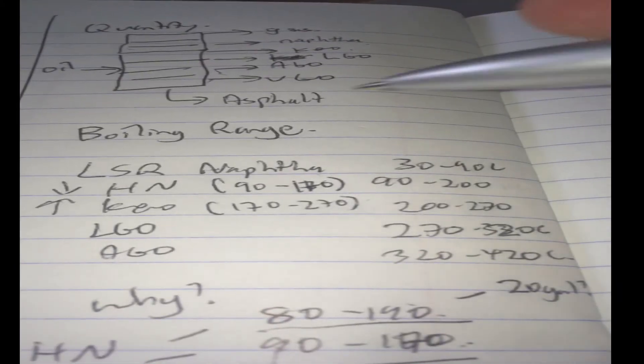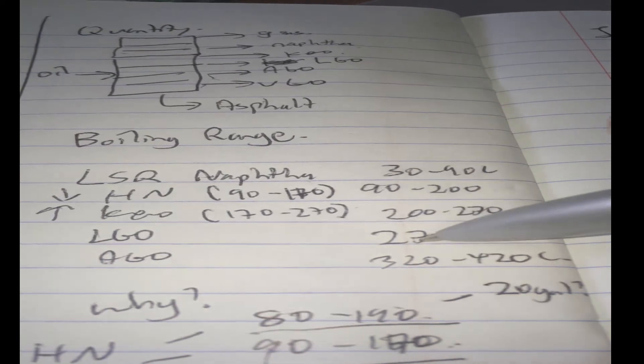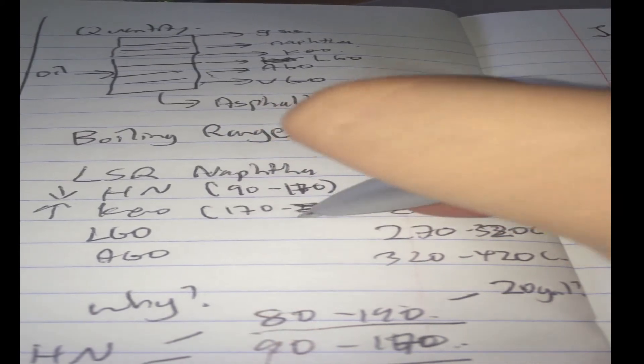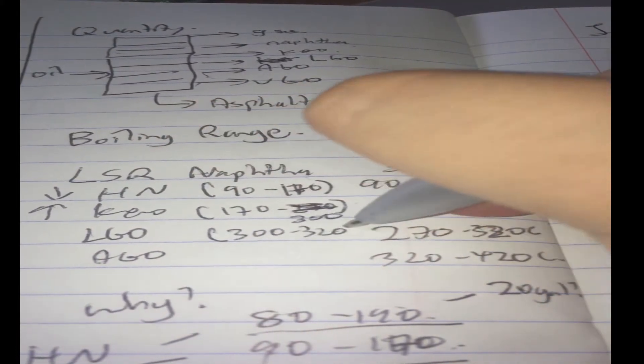So, we have a few specifications, such as final boiling point. Okay, so they say it's 300 degrees C max. So, meaning to say, I can even take some of the cut from here, the light gas oil component, and put it into my kerosene. So, instead of 270, I can have 300. If I want to maximize my kerosene, then my light gas oil will be 300 to 320. That means I don't take as much diesel fuel. Alright?